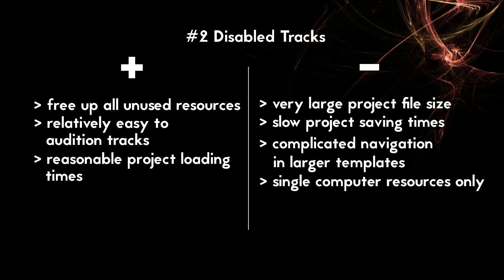However, using disabled tracks comes with a number of compromises. First, your project file will contain all the info about your tracks, so the project file will be huge. If you're in the thousands with your track count, your project file is likely to be over a gigabyte in size. If you rely on saving multiple revisions or versions of your project, you'll notice the toll this takes on your available storage pretty soon. Second, because the project file is very large, it takes a long time to save — depending on your template size, you could be looking at 5 to 15 seconds of waiting time every time your project saves. Most users find this very annoying in combination with autosaves, as your project will lock up while saving.